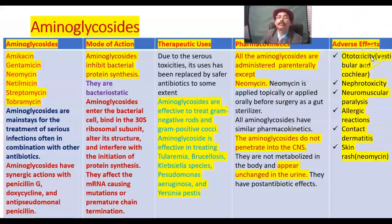Adverse effects of aminoglycosides: ototoxicity — this is due to sensorineural hearing loss and damage to the cochlear part of the eighth cranial nerve, causing hearing loss. The balance is also disturbed; patients suffer from vertigo, imbalance, and dizziness due to the vestibular component of the eighth cranial nerve being affected.